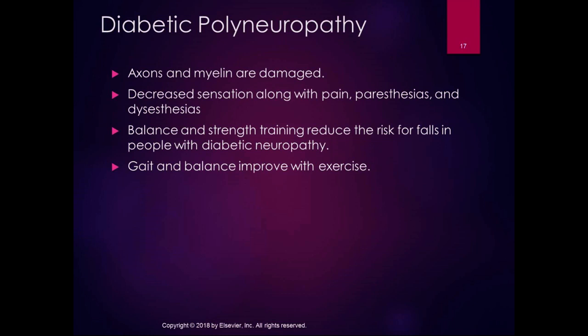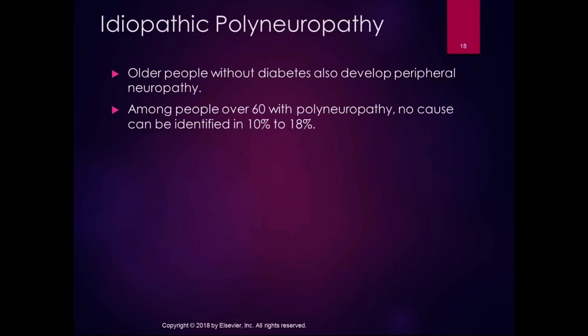Diabetes doesn't just affect the peripheral systems — it also affects cardiovascular, gastrointestinal, and autonomic systems. It's a terrible disease that can really wreak havoc on the body. Idiopathic polyneuropathy also occurs; among people over 60 with polyneuropathy, 10–18% are idiopathic with absolutely no identifiable cause. People with idiopathic polyneuropathy often present with a slapping gait — the foot slaps down because they lack the sensation needed for normal foot placement.